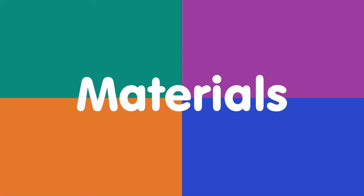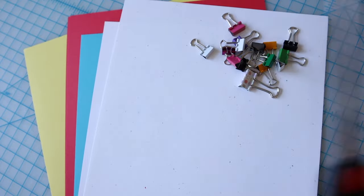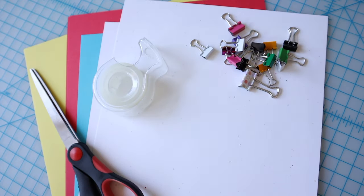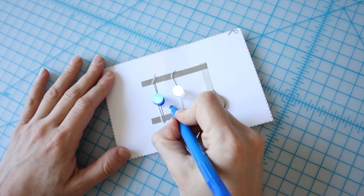Other handy materials to have while building paper circuits is paper, of course, binder clips, scissors, tape, and markers to make your circuits come to life. So let's make some circuits.